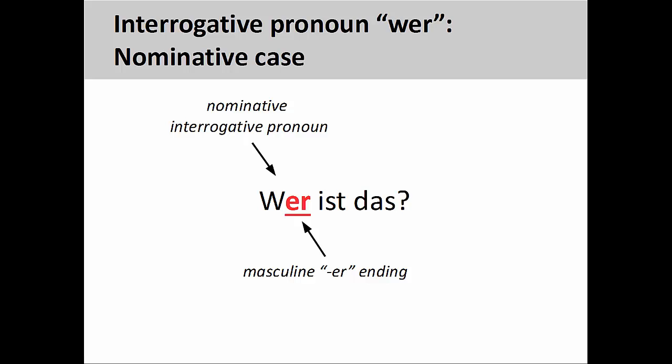The interrogative pronoun 'wer,' meaning 'who,' always takes a masculine ending. The -er ending here indicates that the pronoun is in the nominative case, and therefore acting as the subject of the sentence — 'Wer ist das?' meaning 'Who is that?'